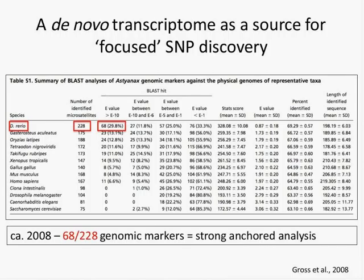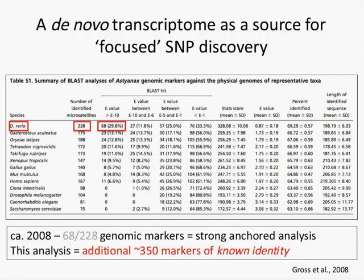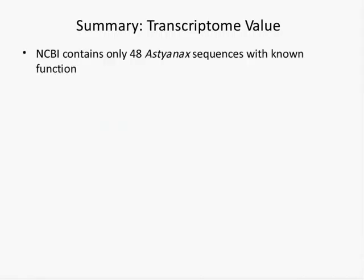Almost all of the markers identified from our transcriptome assembly have been informative and are in the process of being placed to our second-generation linkage map. An example SNP call shows a homozygous A in cave form individuals, homozygous C in surface form individuals, heterozygous F1 individuals, and a very nice segregation in F2 individuals. Based on recombination frequency, we'll be able to place these to our linkage map without much trouble.